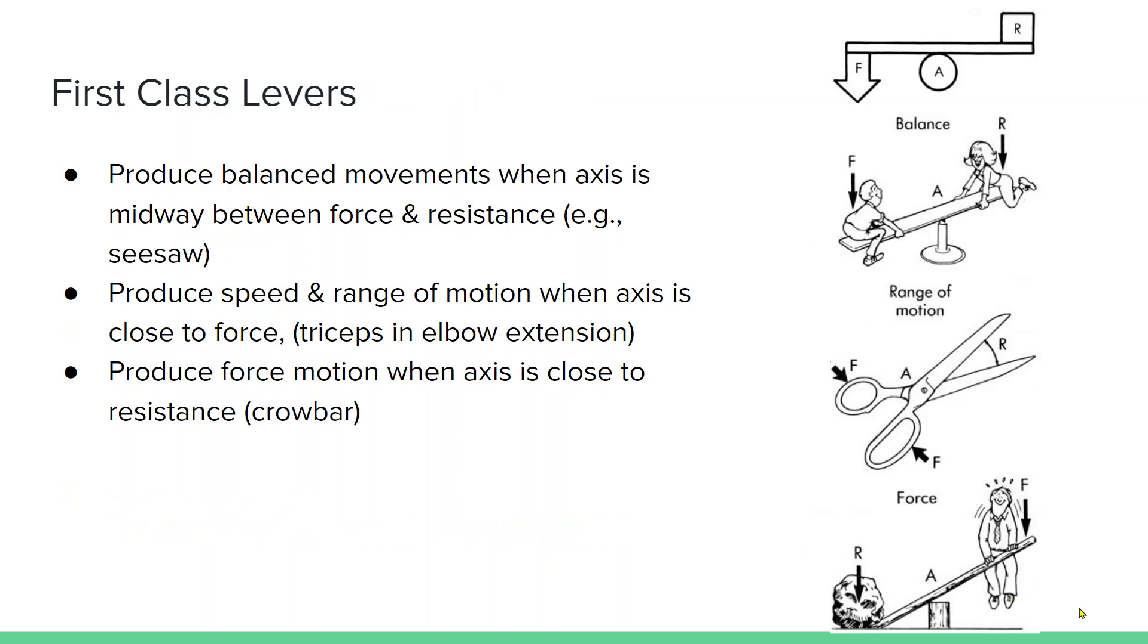Let's go through them in more detail. First class levers produce balanced motion when the axis is midway between the force and resistance and when they're equal. They produce speed and range of motion when the axis is close to the force, like the triceps and elbow extension. And you produce force motion when the axis is close to the resistance, like a crowbar. If you put the crowbar down and your resistance is really close, and you move your force further away, you can gain a mechanical advantage. In the triceps, the triceps are close to the elbow axis, and you're holding a weight out in your hands. So you can generate more speed and range of motion, which we do have at our elbow joint.